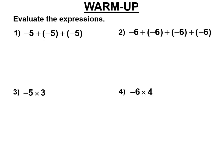Hopefully in sixth grade you started this process. So we have negative five plus negative five plus negative five — how much? Well if you owe five to one person, five dollars to another, and five dollars to a third person, you owe 15. So negative five plus negative five plus negative five is negative 15.